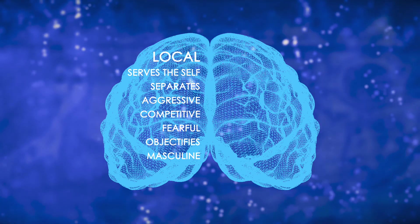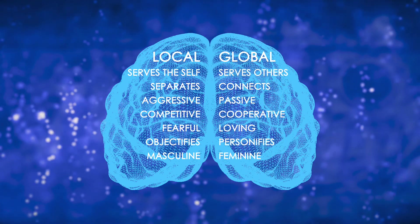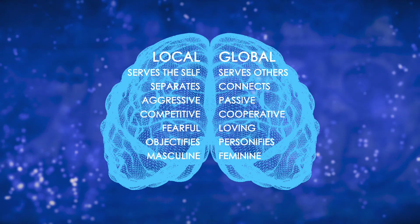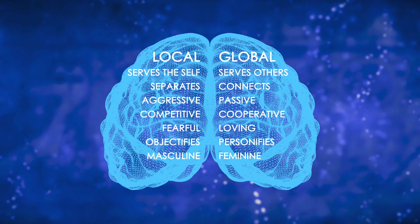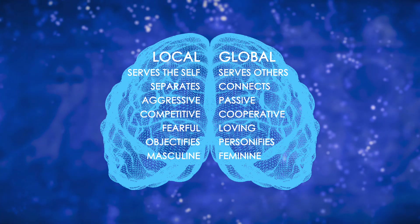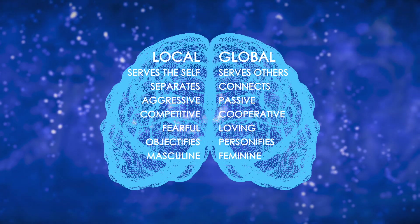In contrast, our globally oriented system values others and service to others, even at the expense of self. When we are globally oriented, we see how people and things connect — we see the oneness. Global system energy is passive. It is cooperative and loving. Our global hemisphere personifies people and things. Its energy has a feminine feel.